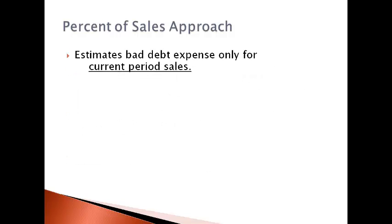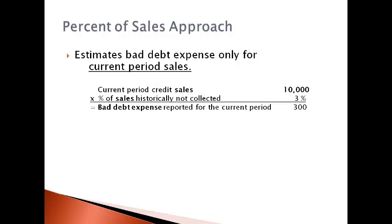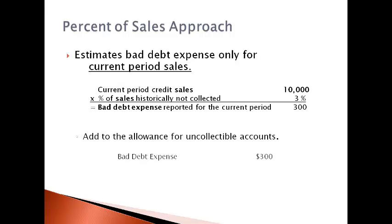The percent of sales method estimates bad debt expense related only to current period sales. Current period sales are multiplied by the percent of sales historically not collected to get the estimated bad debt expense for only the current period. The calculated amount — the current period estimate — is added to the current balance in the allowance for uncollectable accounts.